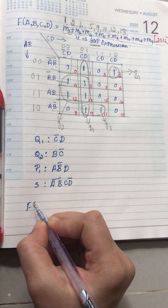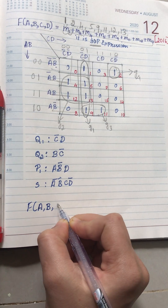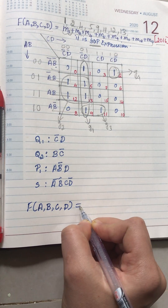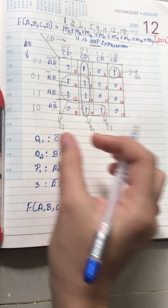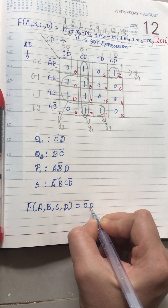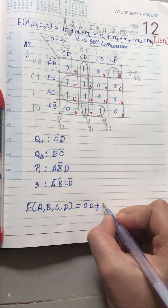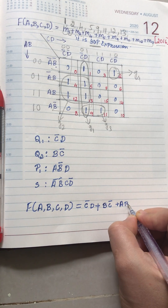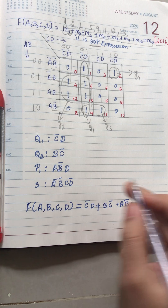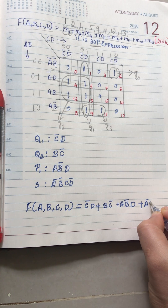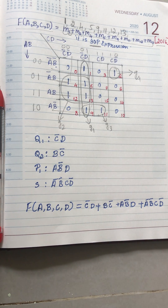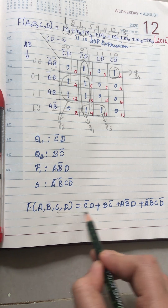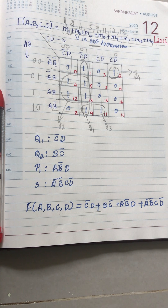Finally, to write the complete expression: F(A,B,C,D) = C-bar·D + B·C-bar + A·B-bar·D + A-bar·B-bar·C·D-bar. This is the final simplified expression. This is the simplest way of writing the K-map result and this is the solution for the 2016 problem.